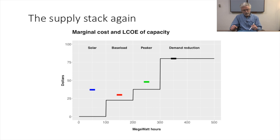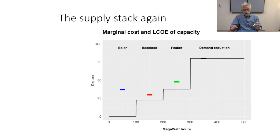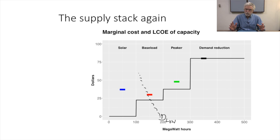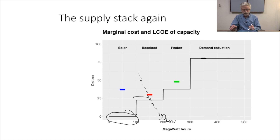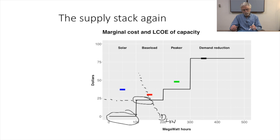In very low demand periods, we'll be using mostly base load resources and renewable resources. Renewable resources are run first, and then the amount of base load resources we need. The price is set by the cost of the base load resources that are run. Meanwhile, the solar facilities are earning some rents.